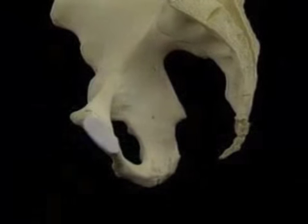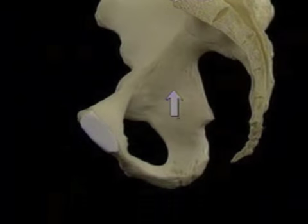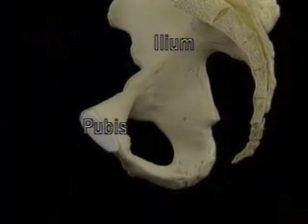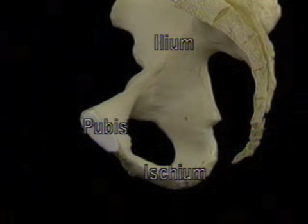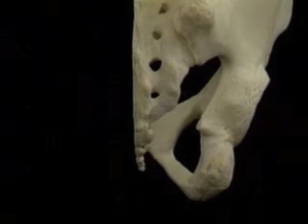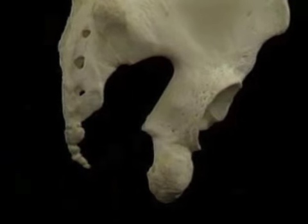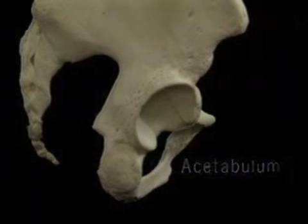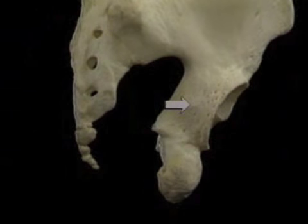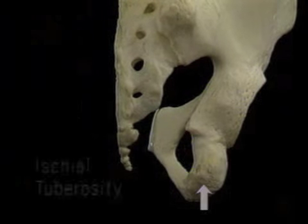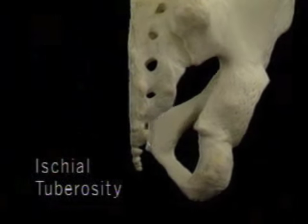Now we'll look at some details of the hip bone. This massively thick part of the hip bone is formed by the fusion of the ilium, the pubis, and the ischium. It's smooth on the inside and on the back. It's deeply indented on the outside by the socket of the hip joint, the acetabulum. This is the body of the ischium, which ends below in this impressive projection, the ischial tuberosity, which is what we sit on.